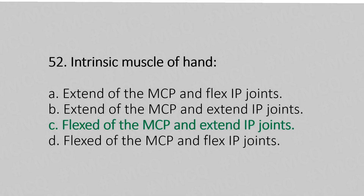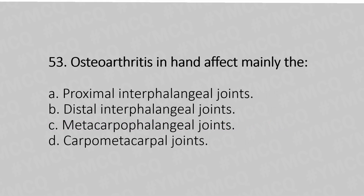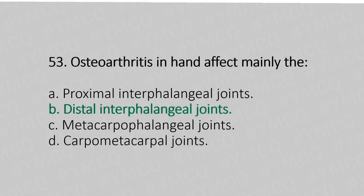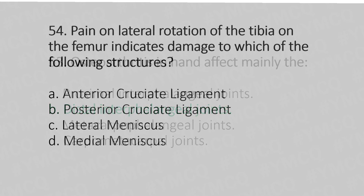Now let's move to question number 53. Osteoarthritis in the hand affects mostly the: option A, proximal interphalangeal joint; option B, distal interphalangeal joint; option C, metacarpophalangeal joint; option D, carpometacarpal joints. And the answer is option B, distal interphalangeal joints.